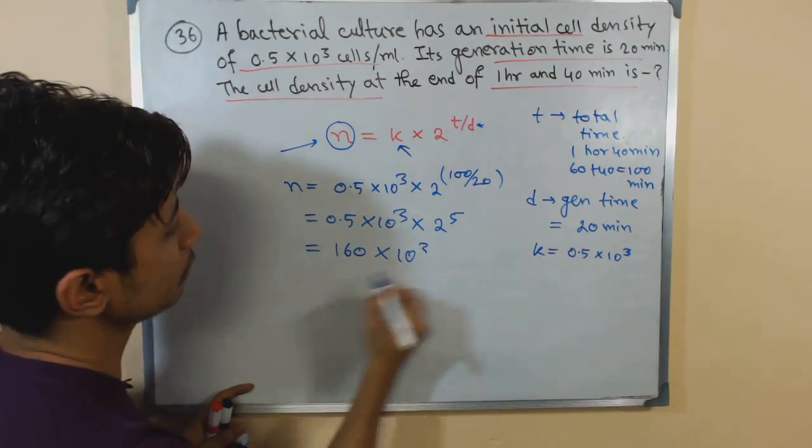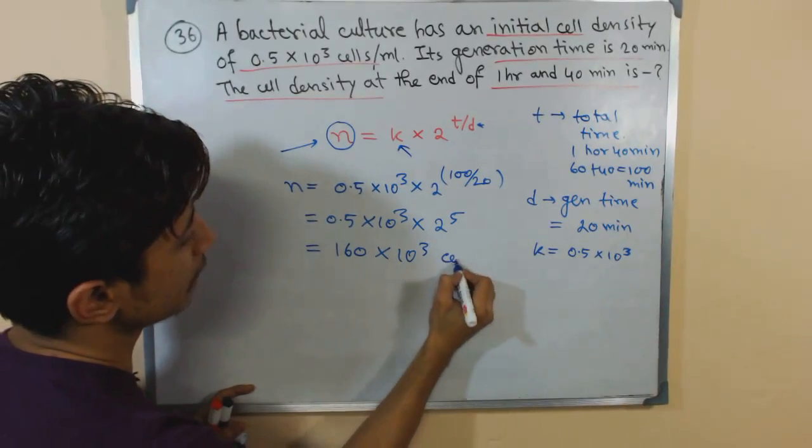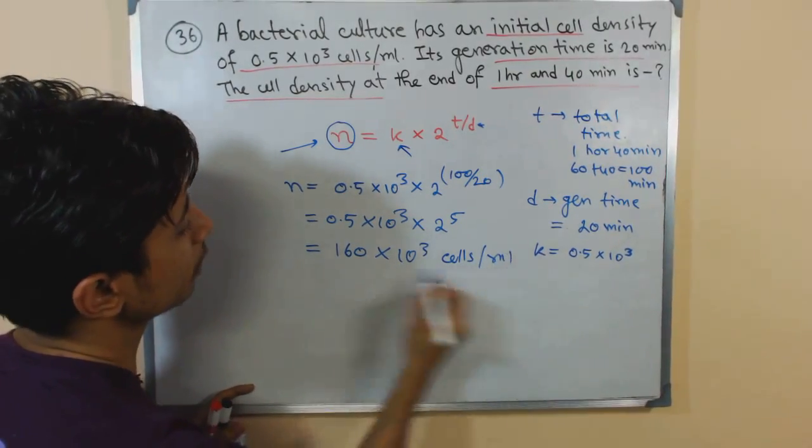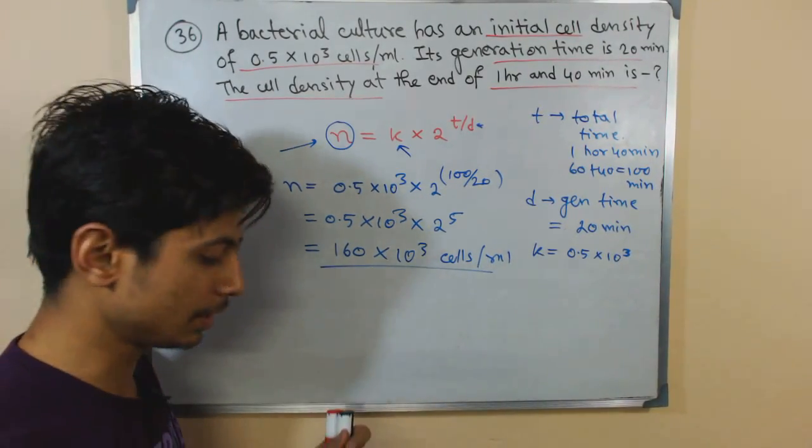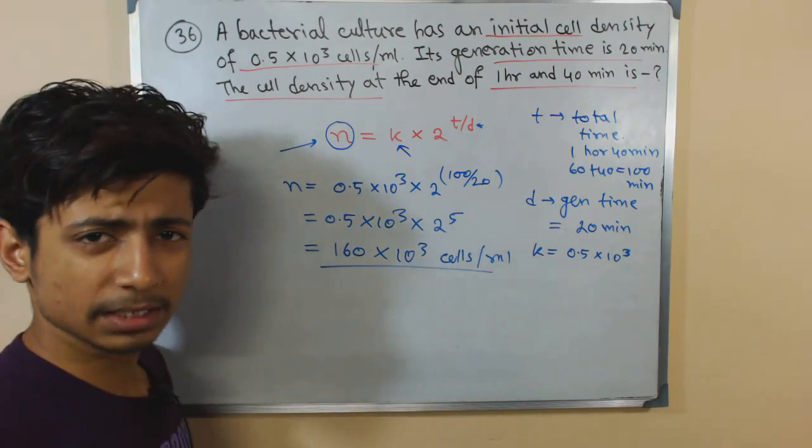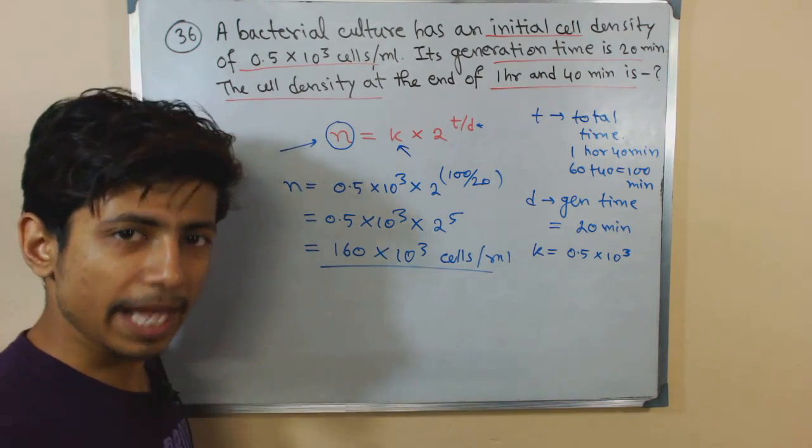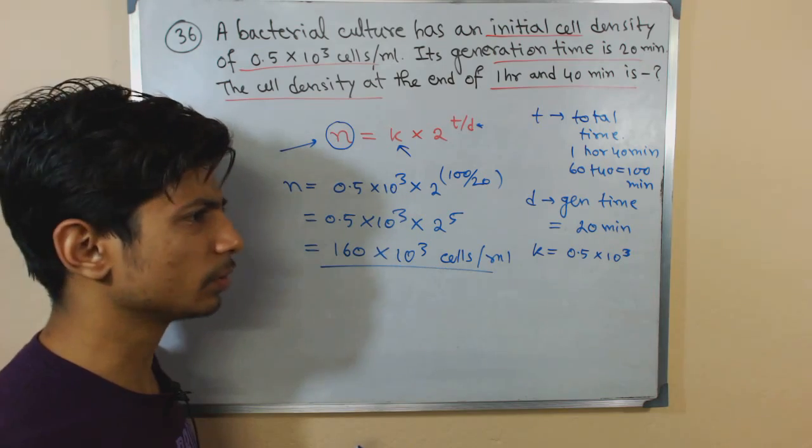Now if we put all those things in a row, we get something 160 into 10 to the power 3 cells. I've already calculated the value, I know the answer, but it's simple math.